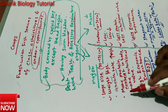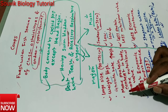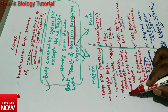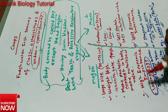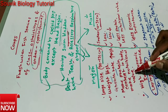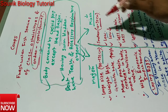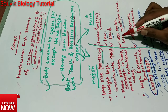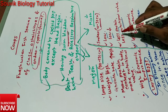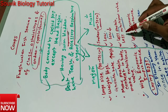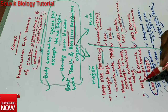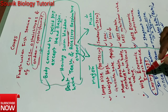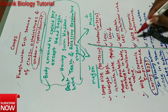Major carps have more protein content in the body, so they have more nutritional value. Whereas minor carps have less protein content and therefore less nutritional value. Major carps have high economic importance, while minor carps have less economic importance.